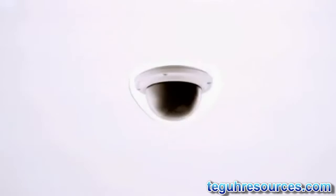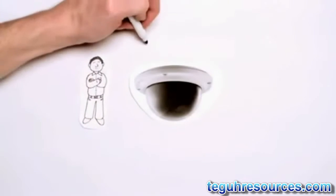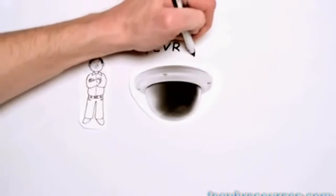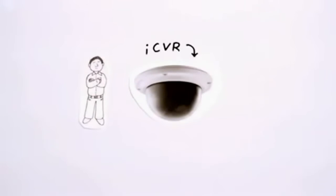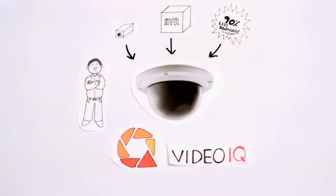Well Jim, good news. There is. It's called the iCVR, a decentralized intelligent camera with onboard NVR storage from Video IQ. Everything Jim just installed from all those different vendors is now contained right inside this itty-bitty IP camera.